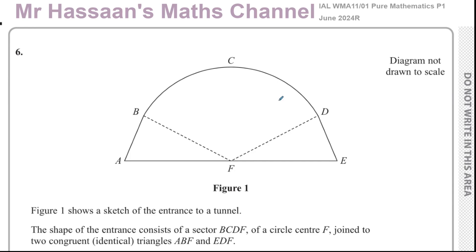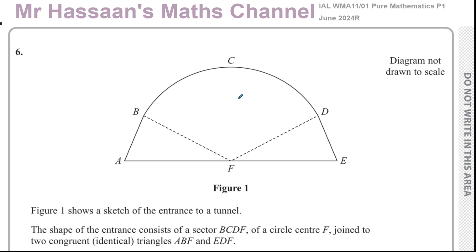I'm now answering question number six from the June 2024 replacement paper from the Edexcel International A-Level exam, Pure Mathematics P1. It says figure one shows a sketch of the entrance to a tunnel. The shape of the entrance consists of a sector BCDF — a sector is like a slice of a circle — with centre F.